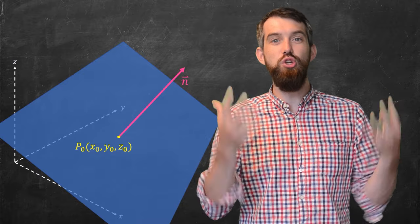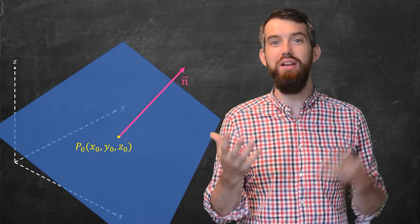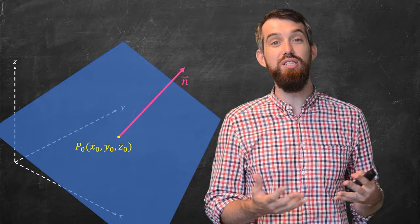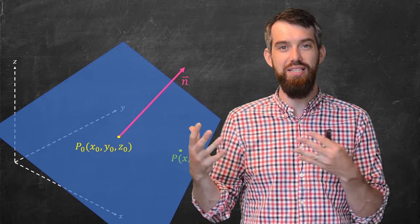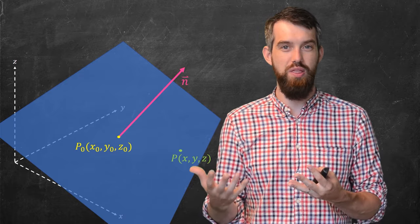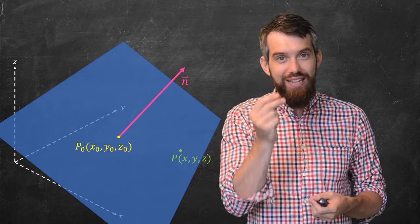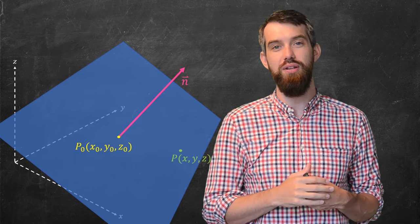So then, if I have those two pieces of fixed information, a fixed point and one of the normals, I want to try to describe all of the points on the plane. So let me just take some other generic point here, this P of x, y, z. This is a generic point on the plane thought as different than the fixed, specific point, the x₀, y₀, z₀.